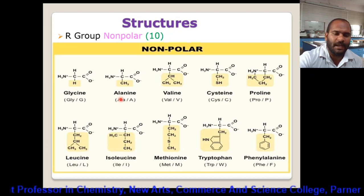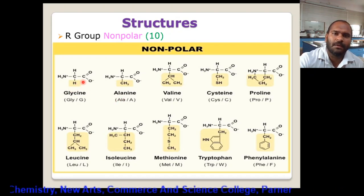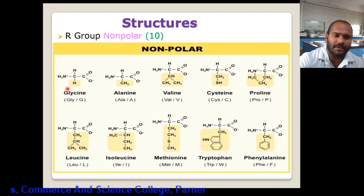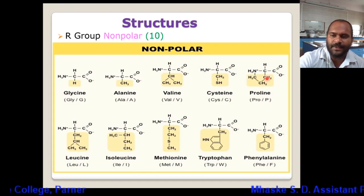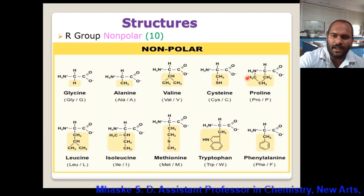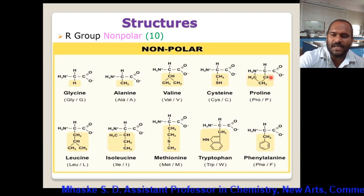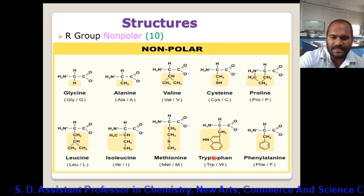These 10 amino acids have a non-polar R group. For glycine, R is equal to hydrogen; for alanine, R is equal to CH3. In the case of proline, there is an interesting case where the side chain R group is involved with the amino group nitrogen.